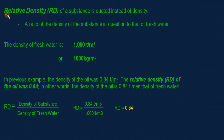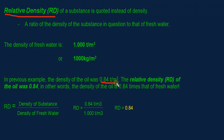Relative density of a substance is quoted instead of density. It is a ratio of the density of the substance in question to that of fresh water. The density of fresh water is 1.0 ton per cubic meter, equivalent to 1,000 kilograms per cubic meter. In the previous example, the density of the oil was 0.84 tons per cubic meter, so the relative density of the oil is 0.84 — meaning the oil is 0.84 times the density of fresh water.